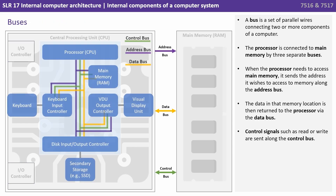A bus is a set of parallel wires connecting two or more components of the computer. The processor is connected to main memory by three separate buses. When the processor needs to access main memory, it sends the address it wishes to access along the address bus. The data in that memory location is then returned to the processor via the data bus, and control signals such as read or write are sent along the control bus.